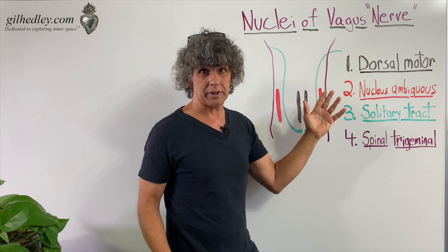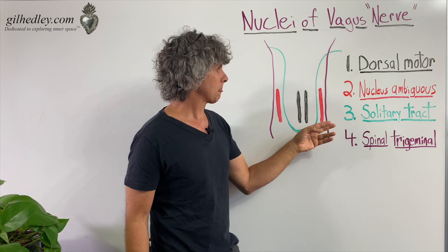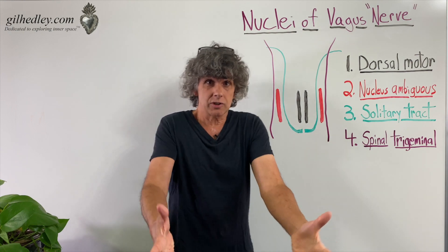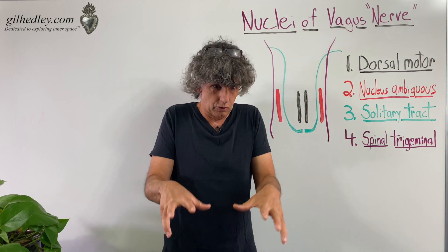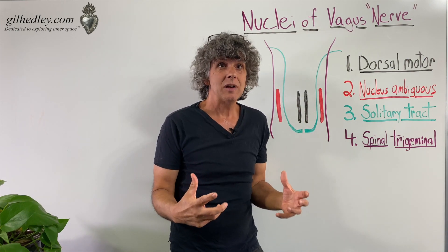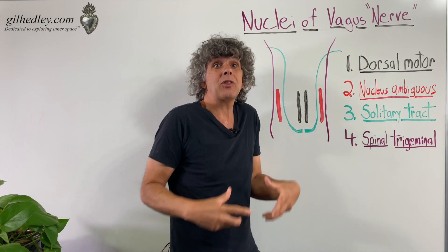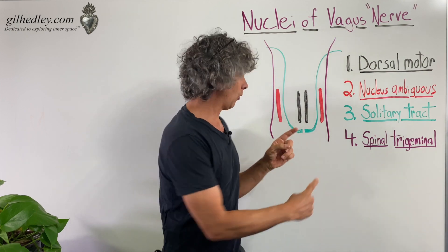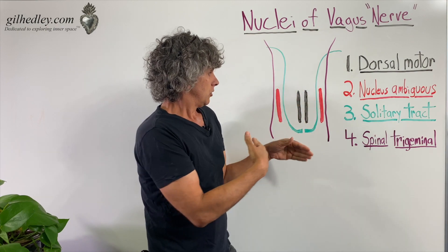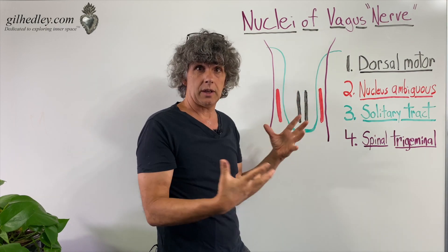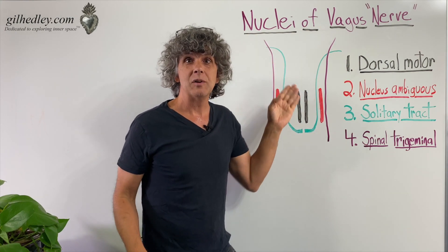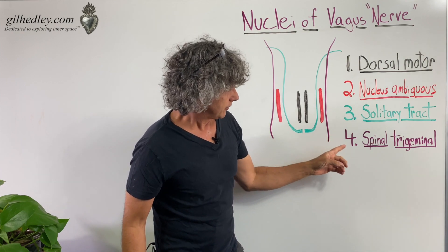What about the solitary tract? The solitary tract is actually a tract of neurons that are afferent — they're going from the organs. It's the primary pathway of afferent fibers from your organs to your brainstem. And some of those fibers are participating in the vagus bundle, though not all of them.